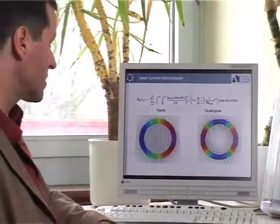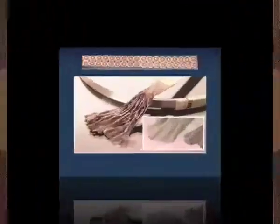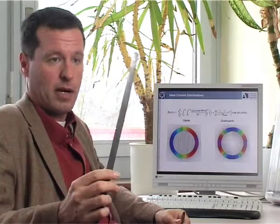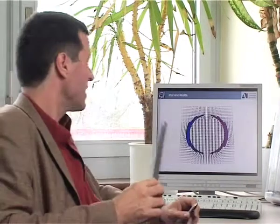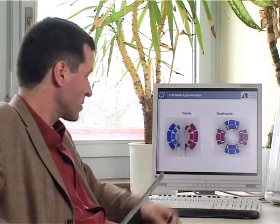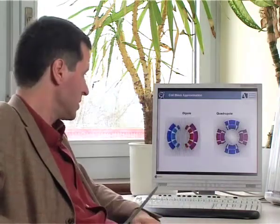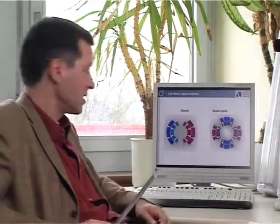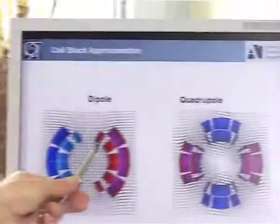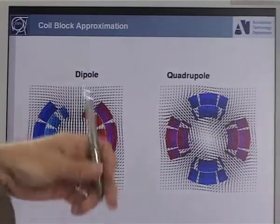We cannot approximate such a current distribution. We want to wind the coil from superconducting cables. Here we have an example. This is carrying about 11,500 amps. What we can do is we can try to approximate this ideal shape by, for example, a number of shells of superconducting cables or by so-called coil blocks, which we then can shape by means of mathematical optimization routines.